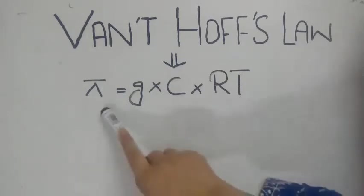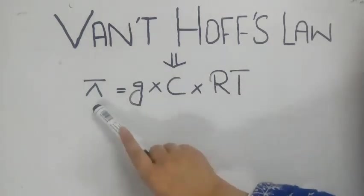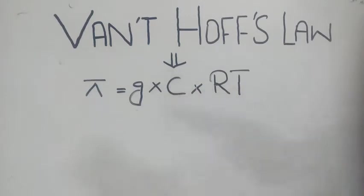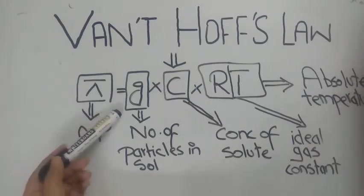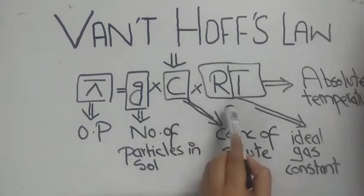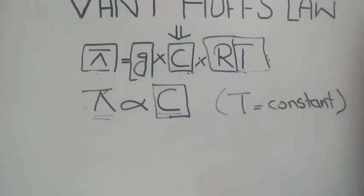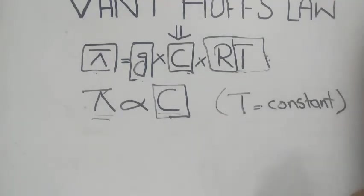The amount of osmotic pressure developed during osmosis can be calculated by Van't Hoff's law, which states that the osmotic pressure of a solution is equal to the product of its solute concentration, the ideal gas constant, and the absolute temperature. In this equation, π is the osmotic pressure, C is the concentration of solute particles, R is the ideal gas constant, and T is the absolute temperature. According to this law, π is directly proportional to C provided that temperature is constant.